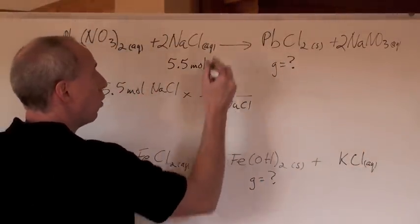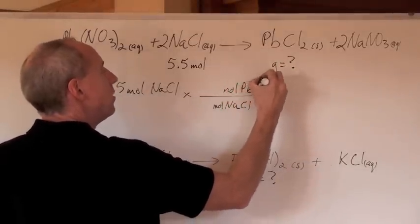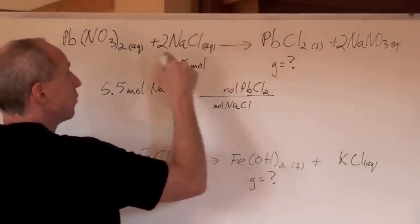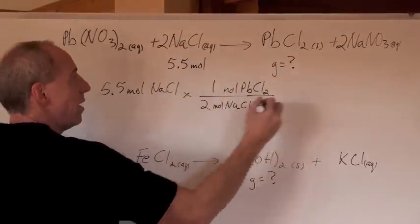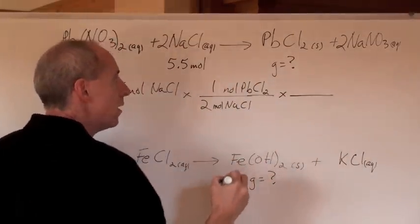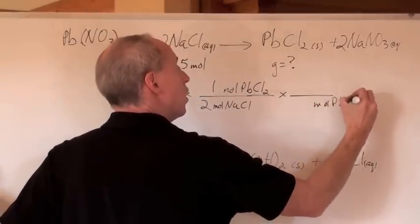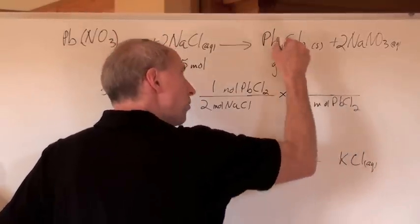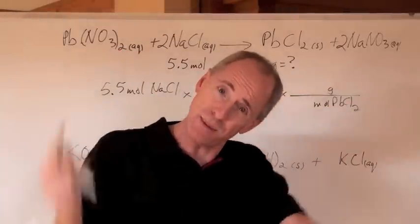5.5 moles of sodium chloride. Don't want moles of sodium chloride, want moles of PbCl2. Got to go through that first. What's the ratio? It's two of those for every one of those. Then times what? Well, we don't want moles of PbCl2. What do we want? Well, we want the grams of it, and we do have a ratio of grams to moles of that. It's called the molar mass.